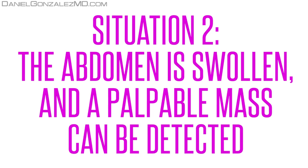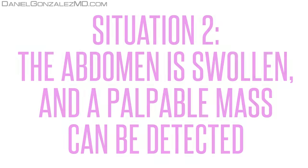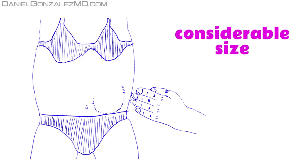Situation 2. The abdomen is swollen and a palpable mass can be detected. The feeling of having a swollen abdomen, and even the possibility to palpate a mass in the area of the ovaries, is typical of tumors that have already acquired a considerable size. At least the size of a tennis ball.